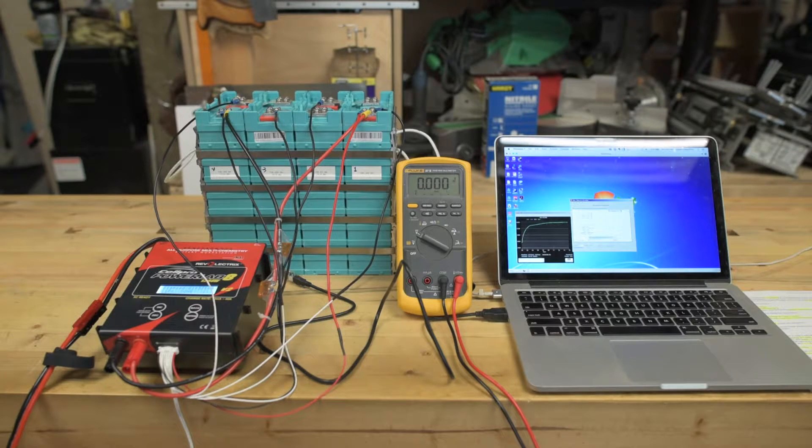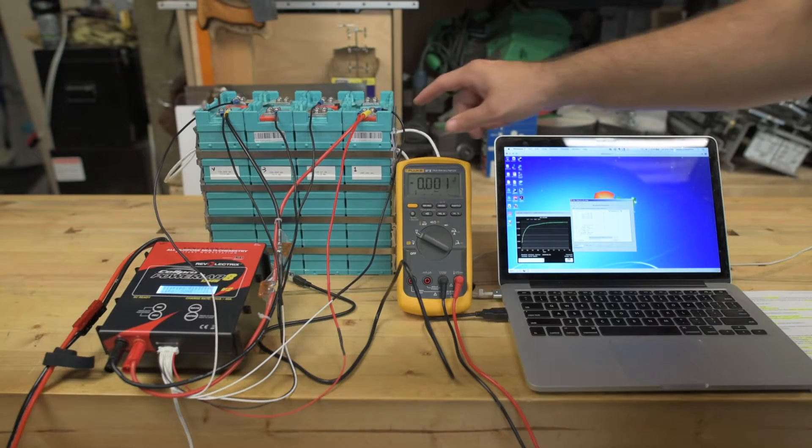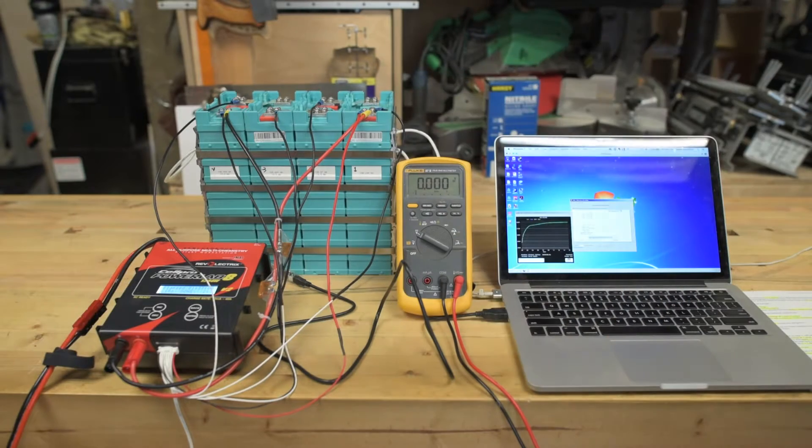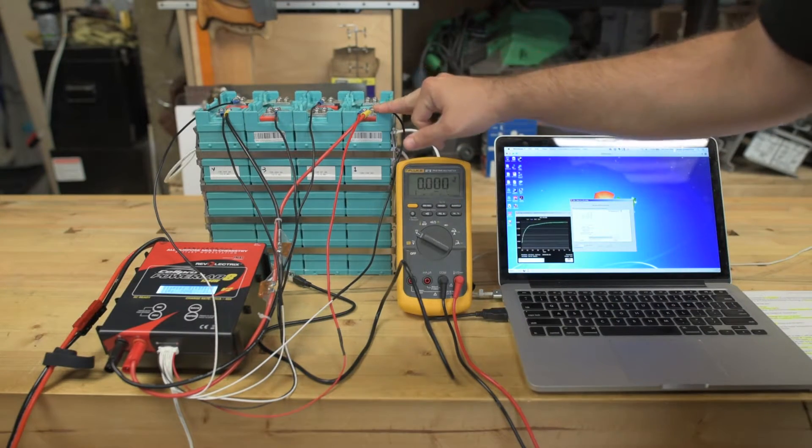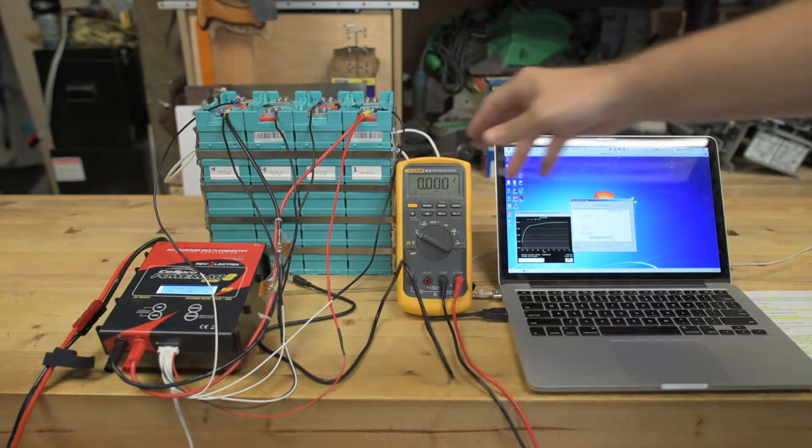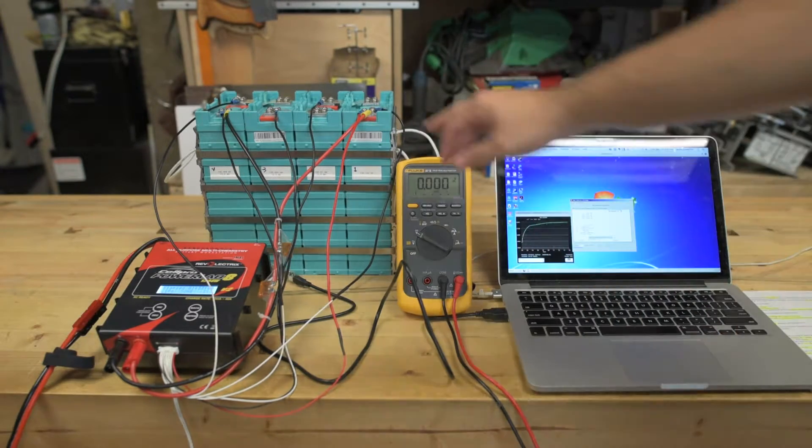Hey, this is Jesse with Create This. Today we're going to perform a manual internal resistance test on each cell of this LiFePO4 12 volt 100 amp hour battery. This is a GBS battery.